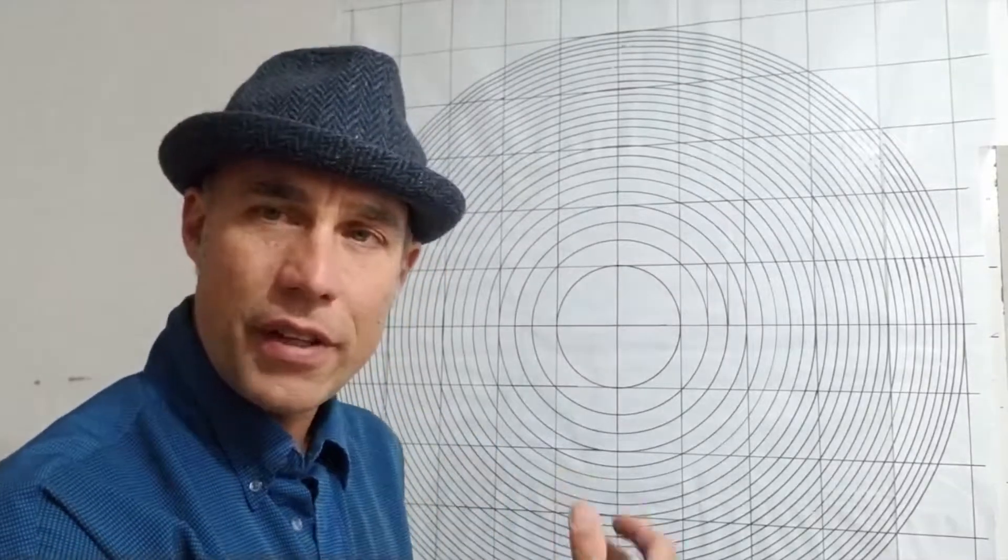Alright so here we go. Okay, again here's that series of circles and so we're just going to look at the fifth circle in the series. It's a circle with the radius of the square root of five.